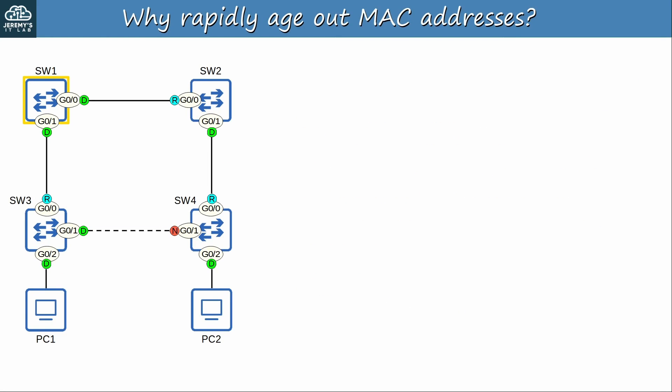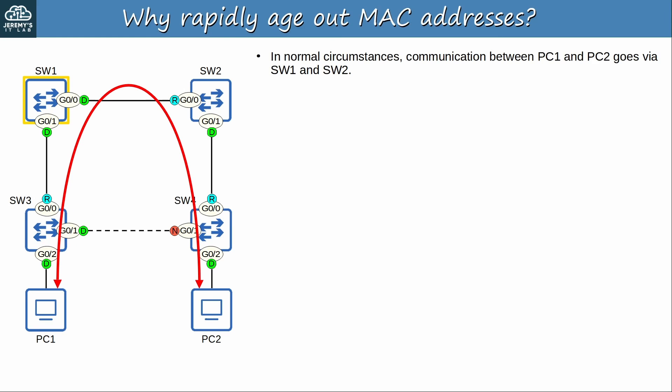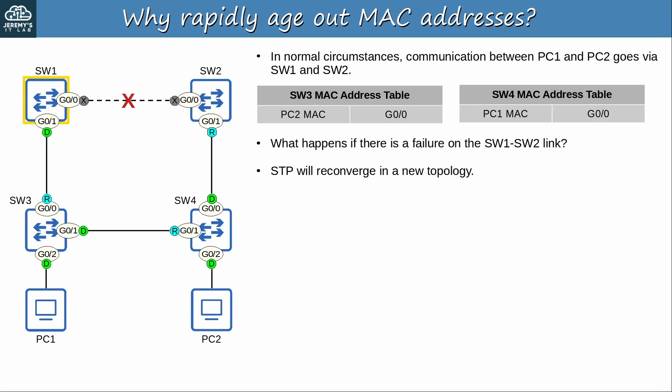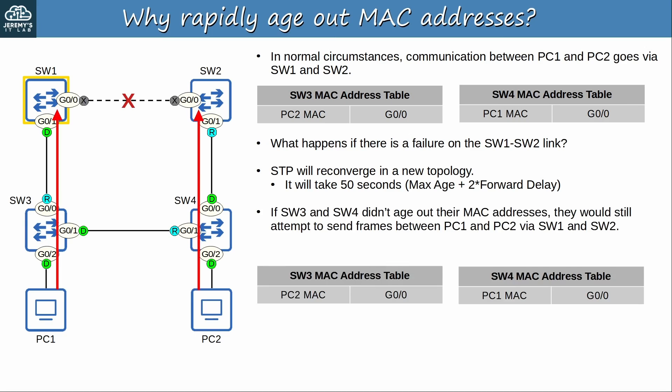So why rapidly age out MAC addresses? In normal circumstances, communication between PC1 and PC2 goes via SW1 and SW2. The SW3 to SW4 link is blocked by STP. Here are SW3's MAC address table entry for PC2 and SW4's for PC1. But what happens if there is a failure on the SW1-SW2 link? Of course STP will reconverge in a new topology, which will take 50 seconds — the max age timer and twice the forward delay timer. If SW3 and SW4 didn't age out their MAC addresses, they would still attempt to send frames between PC1 and PC2 via SW1 and SW2.